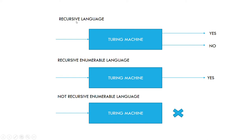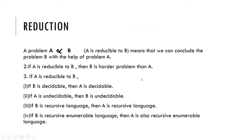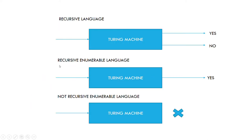That is the case with recursive language — it says yes and it also says no. In the case of recursive enumerable language, if the string is accepted it says yes; otherwise it says nothing — it doesn't say no if the string is not accepted. The third type, not recursive enumerable language, doesn't even say yes. That is why it is undecidable.